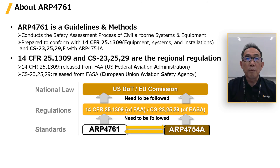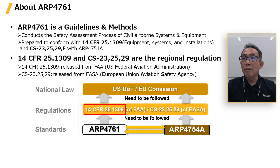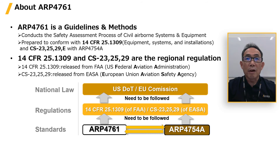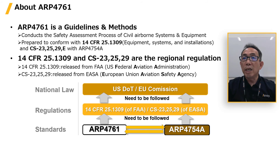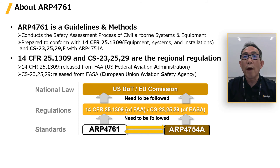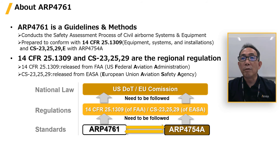4761 will be used with 4754A to certify civil airborne systems and equipment, in conformance with regional regulations such as 14 CFR 25.1309 and CS-23/25/29. 14 CFR 25.1309 is the regulation of the FAA in the U.S. DOT, and CS-23/25/29 is the regulation of EASA in the EU Commission. To simplify, 4761 and 4754A must be followed alongside each country's regional regulations.